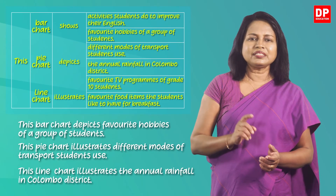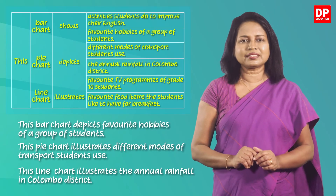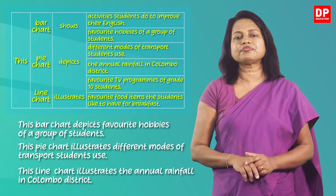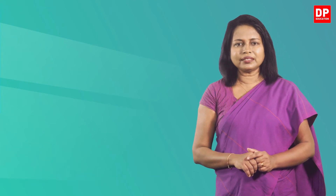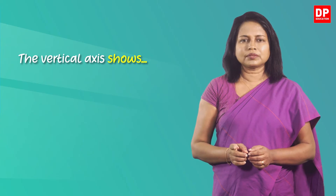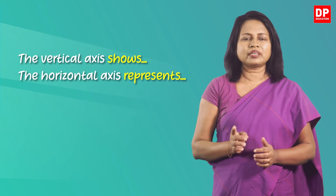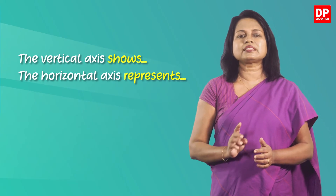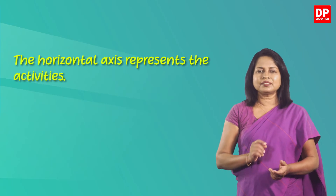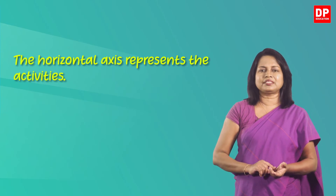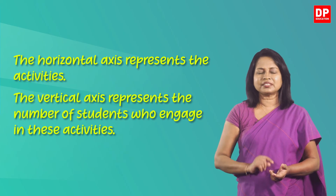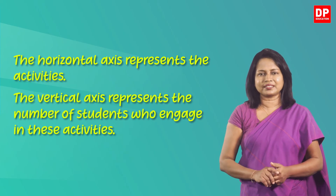Ok children, now let's learn how to introduce the horizontal axis and the vertical axis of a chart. We can do it like this: 'The vertical axis shows' or 'The horizontal axis represents'. You can write 'shows' or 'represents' as the verb. So with regard to the chart we are studying, we can write: 'The horizontal axis represents the activities. The vertical axis represents the number of students who engage in these activities.'